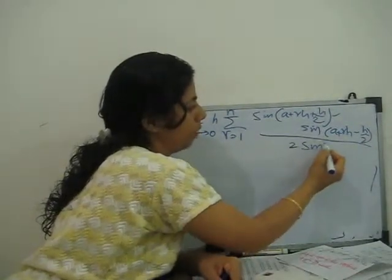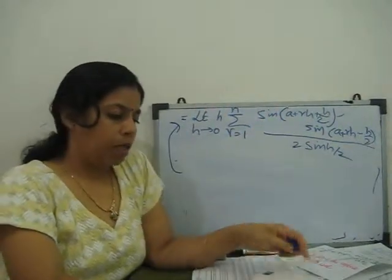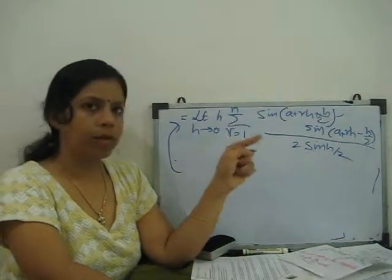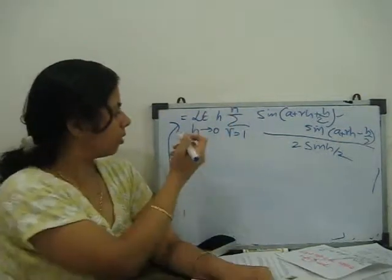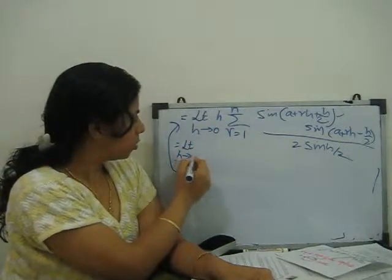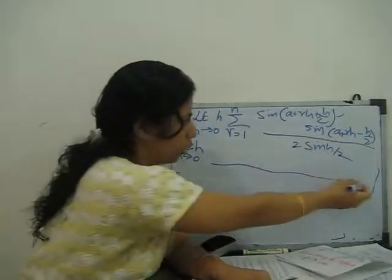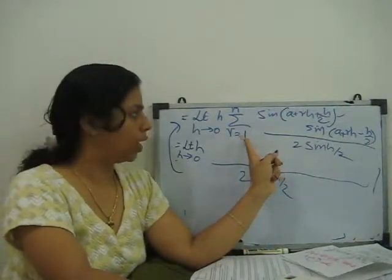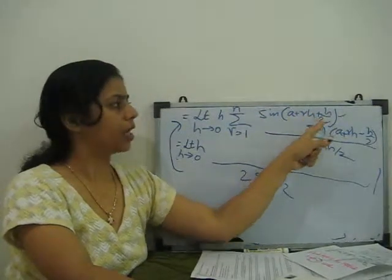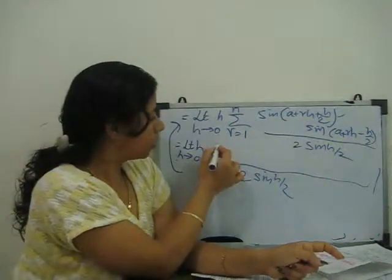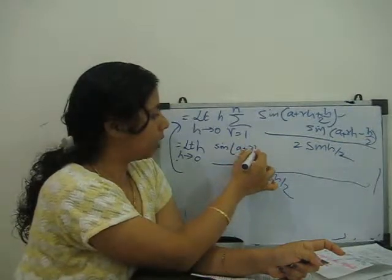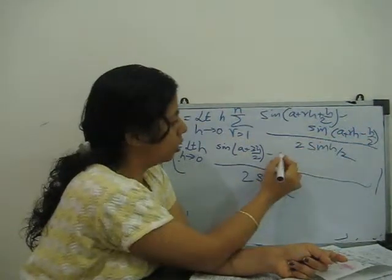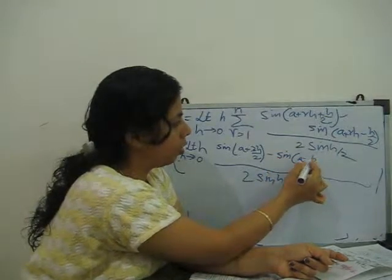The full expression is: limit h tends to 0, h times summation from r = 1 to n of [sin(a + rh + h/2) − sin(a + rh − h/2)], divided by 2·sin(h/2). Substituting r = 1: sin(a + 3h/2) minus sin(a + h/2). For r = 2: sin(a + 5h/2) minus sin(a + 3h/2).